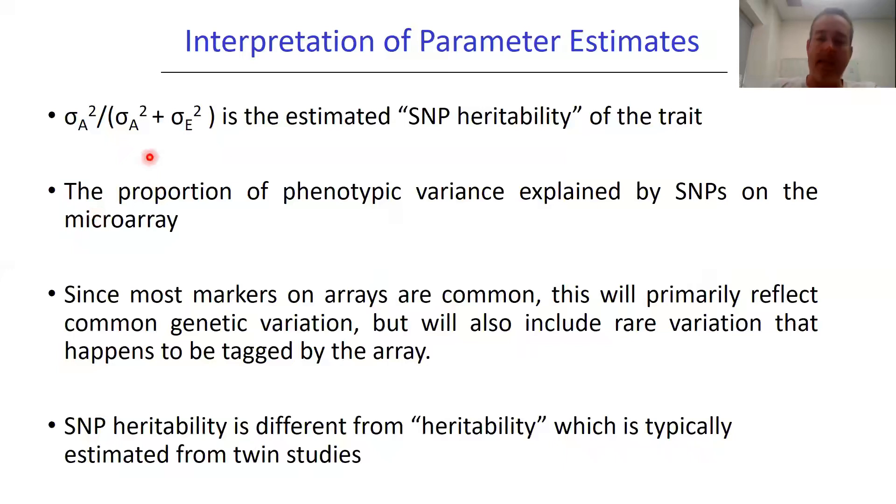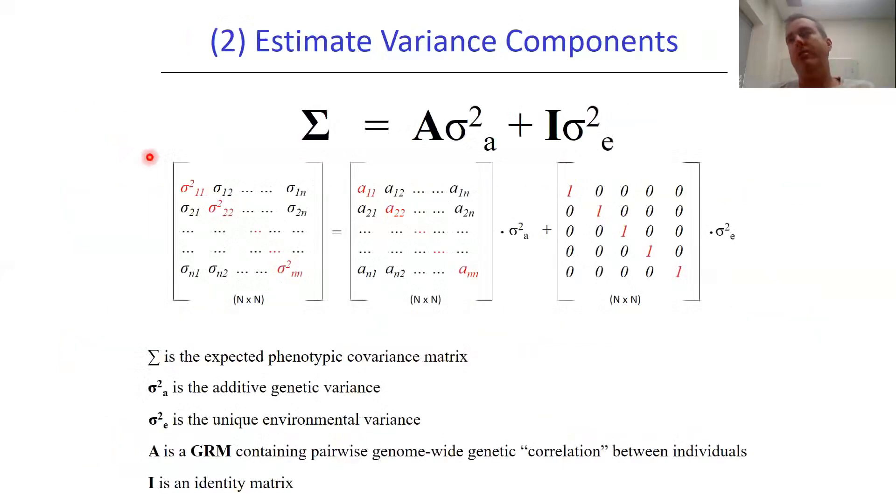At the end of this process, you can imagine that behind the scenes GCTA or OpenMX is twiddling these parameters, σ²_A and σ²_E, to get the most likely values for them. When the algorithm reaches its optimum,